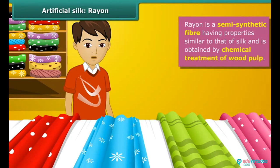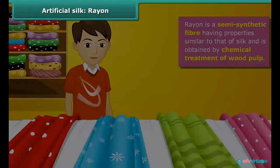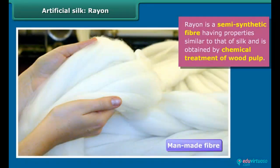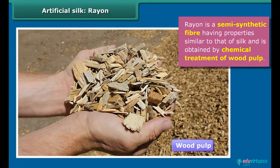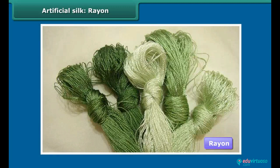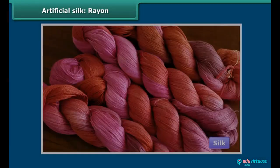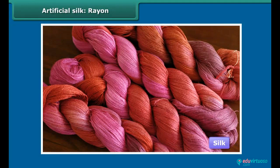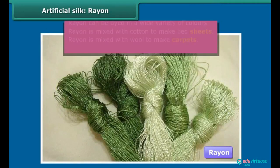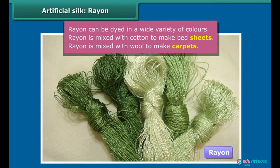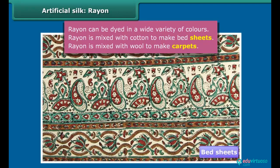Do you know that rayon is a semi-synthetic fiber having properties similar to that of silk? It is a man-made fiber obtained by chemical processing of wood pulp, which is a natural resource. Rayon is also known as artificial silk. It is cheaper than silk but resembles it, and can be woven like silk fibers and dyed in a wide variety of colors.